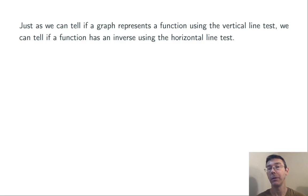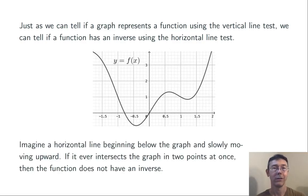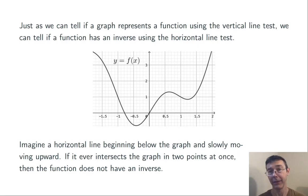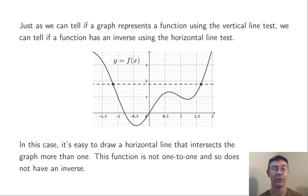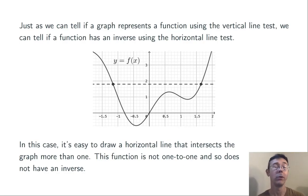Just as we can tell if a graph represents a function by using the vertical line test, we can tell if a function has an inverse using the horizontal line test. Here's how it works: imagine a horizontal line moving from bottom to top on the grid. If it ever touches the graph more than once, the graph represents a function that is not one-to-one. If it always touches the graph at most once, then the function is one-to-one and therefore has an inverse. In the example drawn here, we can draw many horizontal lines that hit the graph at more than one point — so this is not a one-to-one function and does not have an inverse.